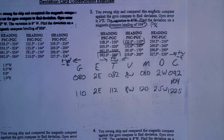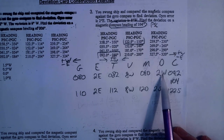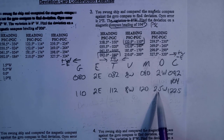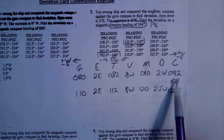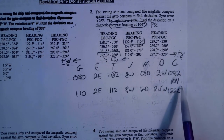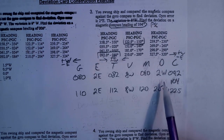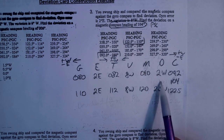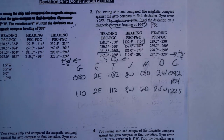Now I can calculate the deviation for each pair. For PSC 092: magnetic was 090 — difference is 2, and since I had to subtract to get there, it's 2 West. For PSC 122.5: magnetic was 120 — difference is 2.5 West. Since 104 is roughly halfway between 92 and 122, the deviation should land about halfway between 2W and 2.5W, around 2.2 or 2.3 — but let me calculate it mathematically.